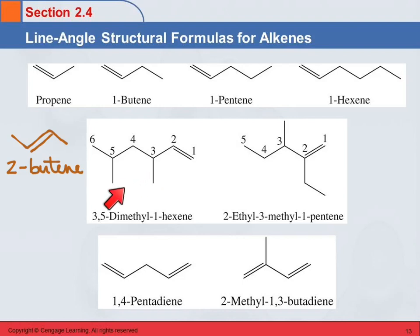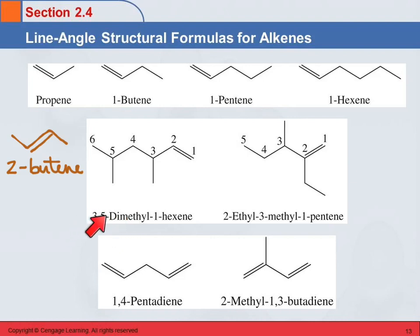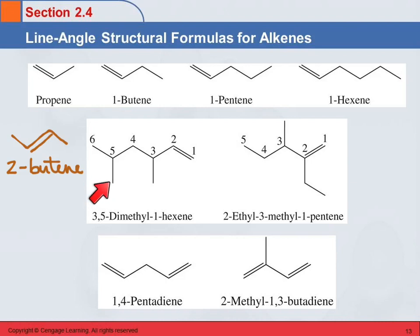And then we get some with substituents on them. This one's name is 3,5-dimethyl-1-hexene. Hexene tells us that there are six carbons. The double bond is on the first carbon to the second carbon. Dimethyl tells us two methyl groups — one on carbon-3, one on carbon-5. Remember that at the end of each line is a carbon atom, with however many hydrogens it needs to have its octet be full.